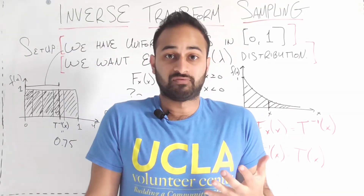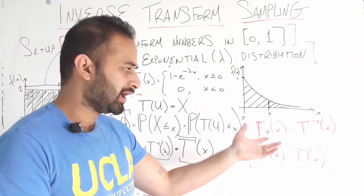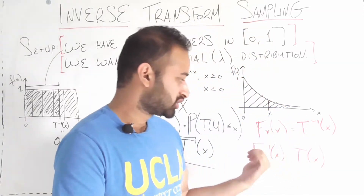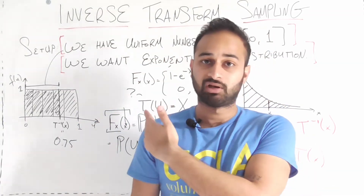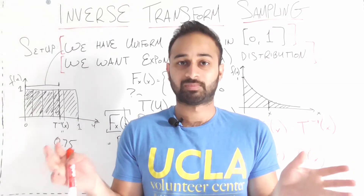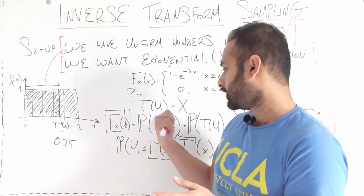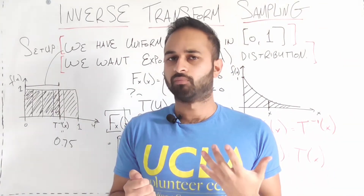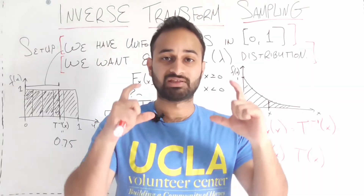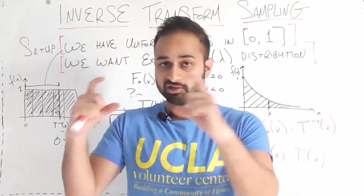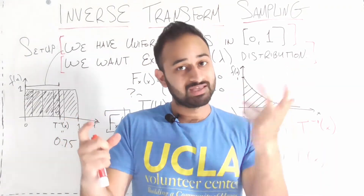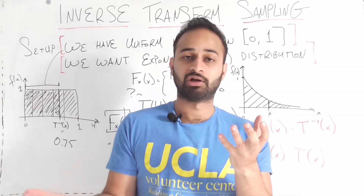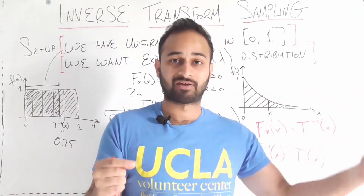This result works in general — we didn't assume anything specific about the exponential distribution during the derivation. For any target distribution X you want to generate, take its CDF, find the inverse of that CDF if possible, and that is the function you run your uniform numbers through to get back the desired distribution.